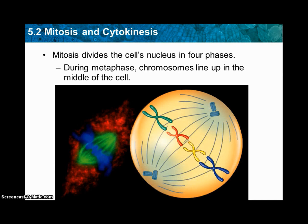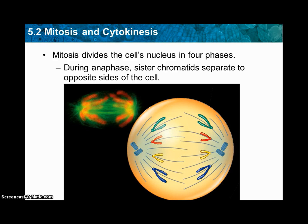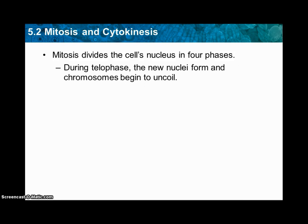The next phase is metaphase — the chromosomes line up in the middle of the cell. Does everybody see the big X's? Those are the chromosomes lining up right in the middle. In anaphase, the sister chromatids separate to opposite sides of the cell — they get pulled apart, so the X's break right in half. In telophase, the nuclei form and chromosomes begin to uncoil.